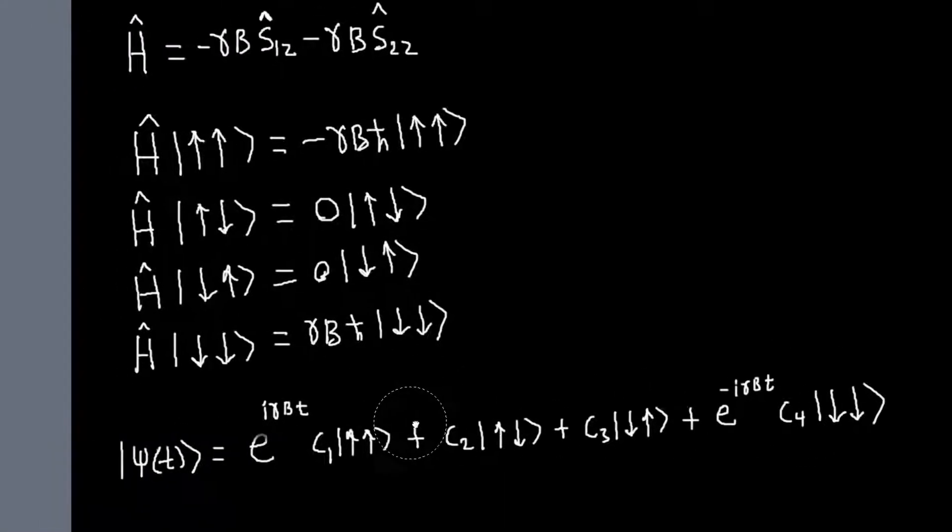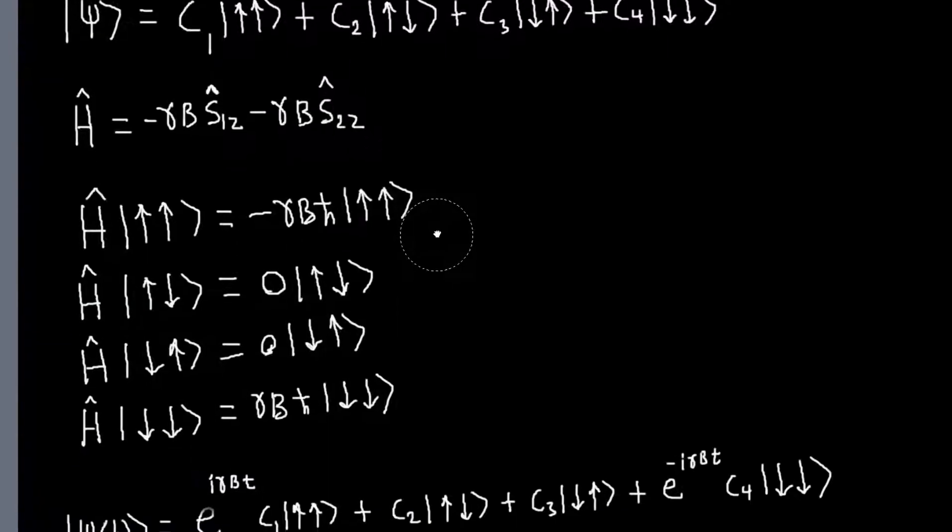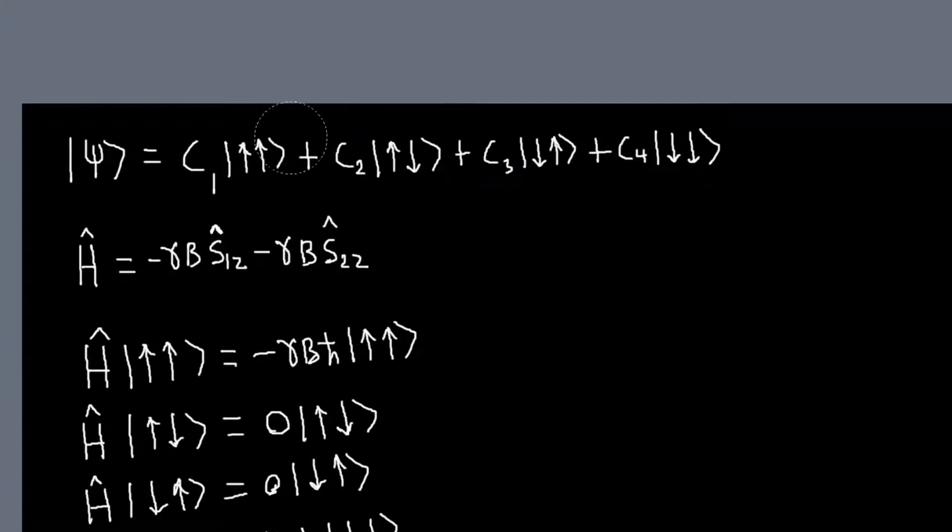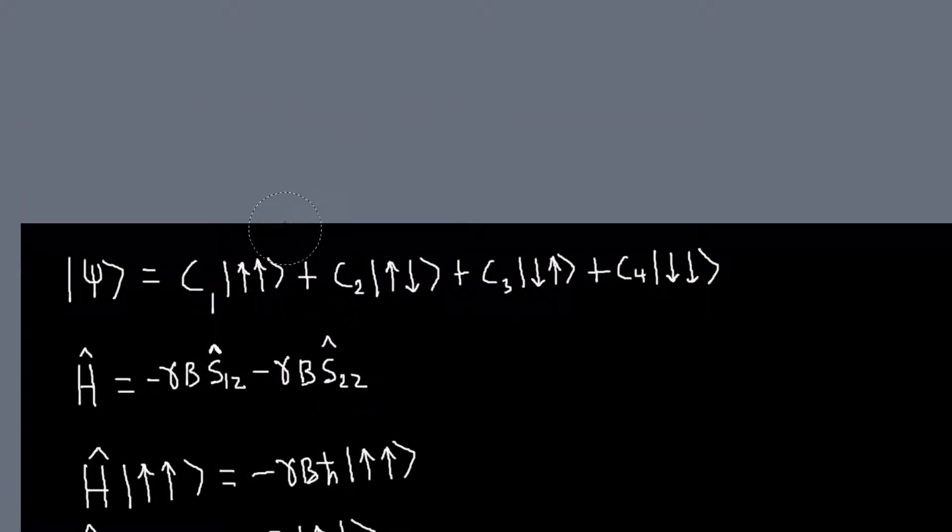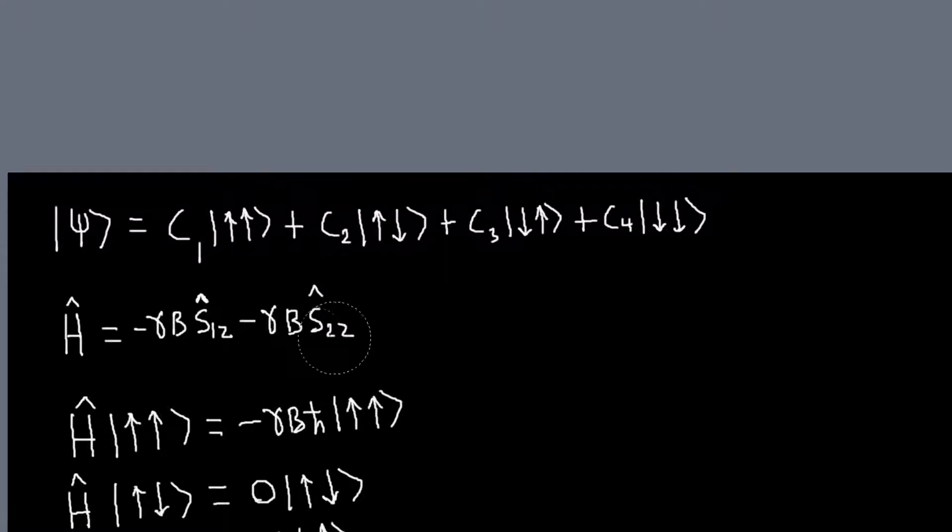So we've solved the problem. And again, it's easy to do, because the states that we expanded our state vector in, the basis states that we expanded our state vector in, happened to be eigenstates of the Hamiltonian.